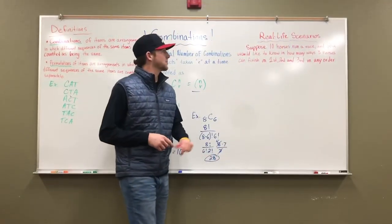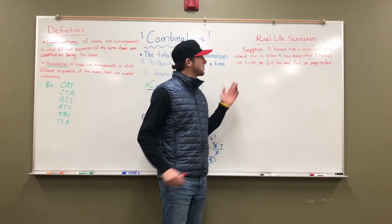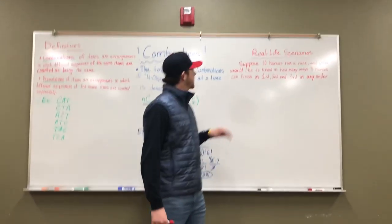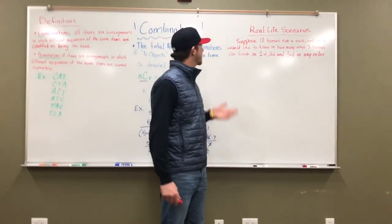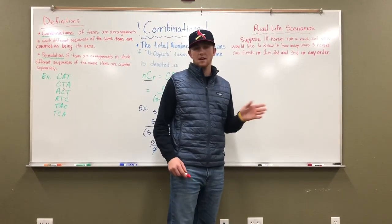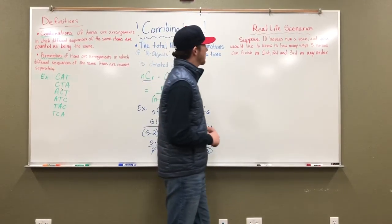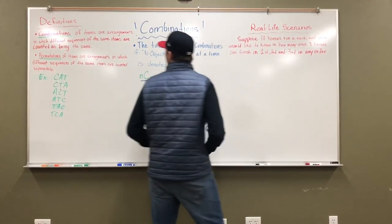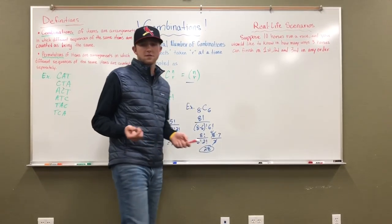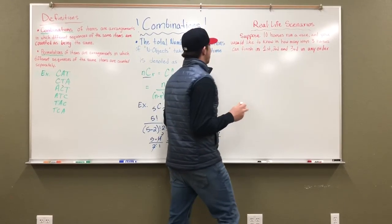Let's take a look at some real life scenarios. Suppose ten horses run a race and you would like to know in how many ways three horses can finish in first, second, and third in any order. So now that we see that it's in any order, we know it's a combination because order does not matter.